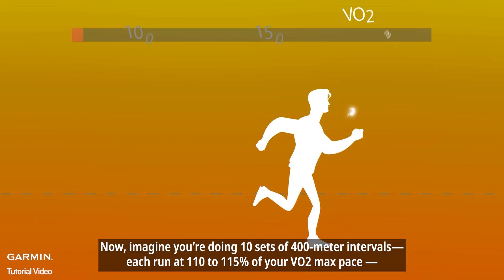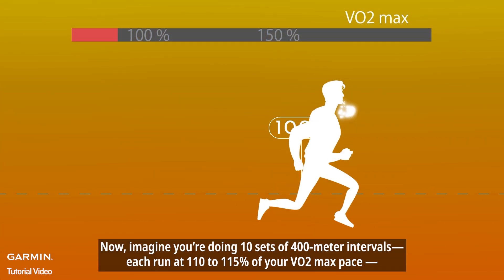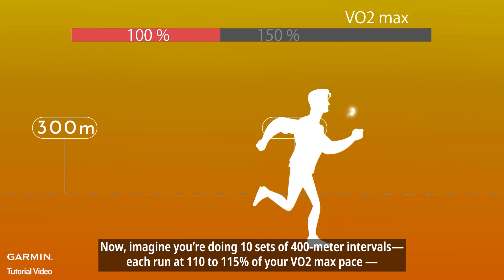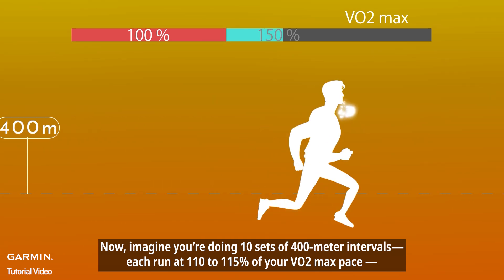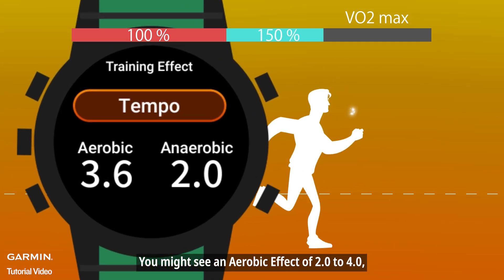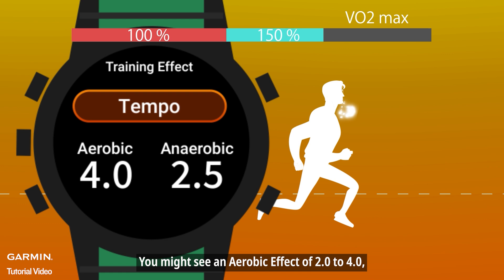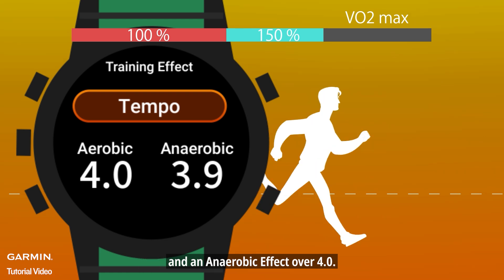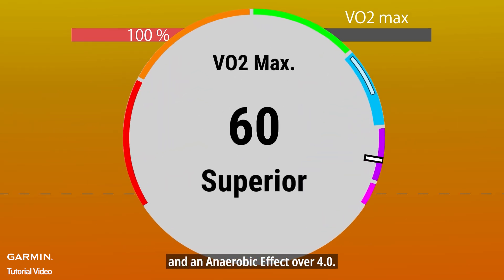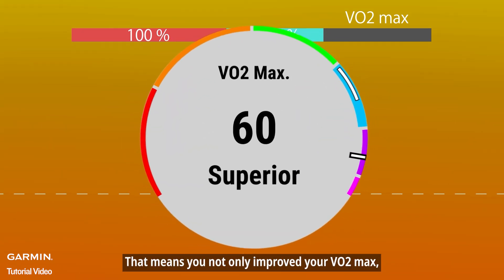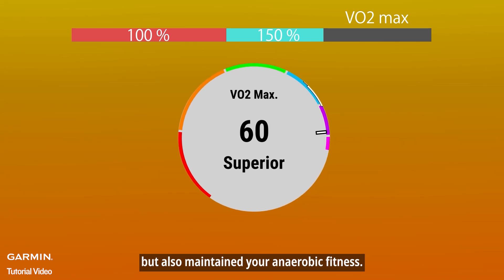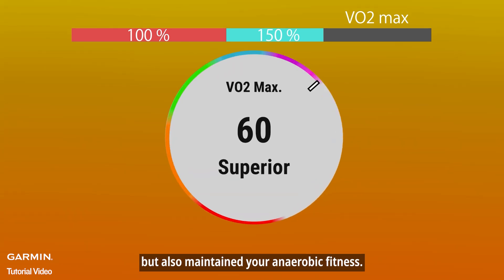Imagine you're doing 10 sets of 400 meter intervals, each run at 110 to 115 percent of your VO2 max pace. You might see an aerobic effect of 2.0 to 4.0 and an anaerobic effect over 4.0. That means you not only improved your VO2 max, but also maintained your anaerobic fitness.